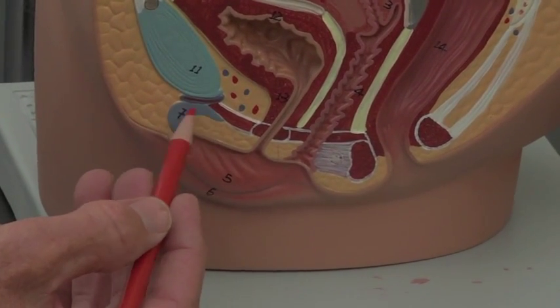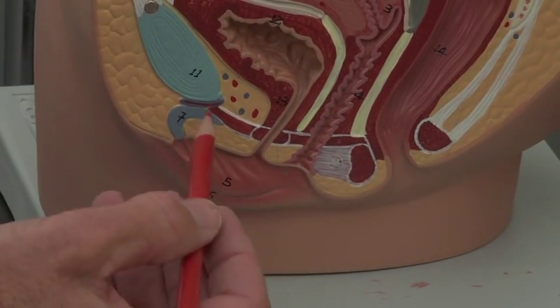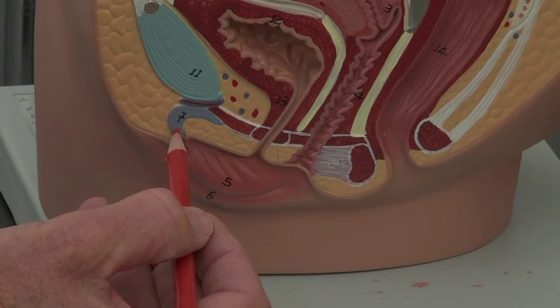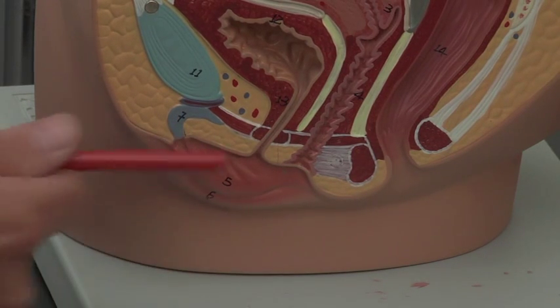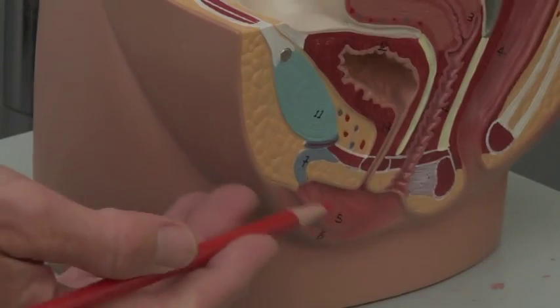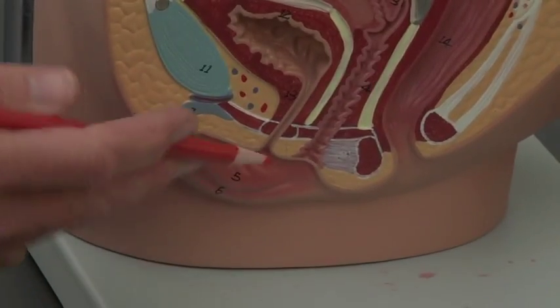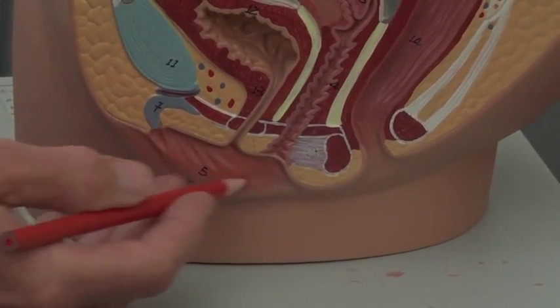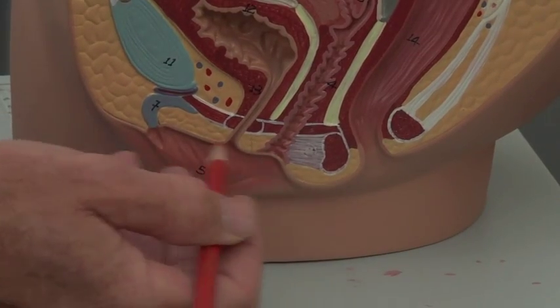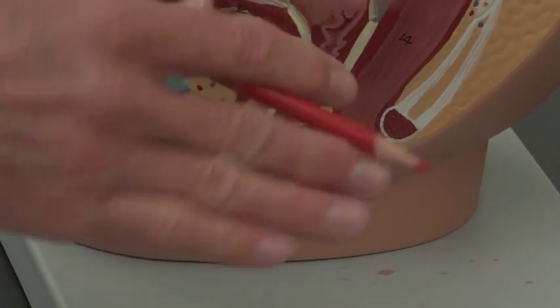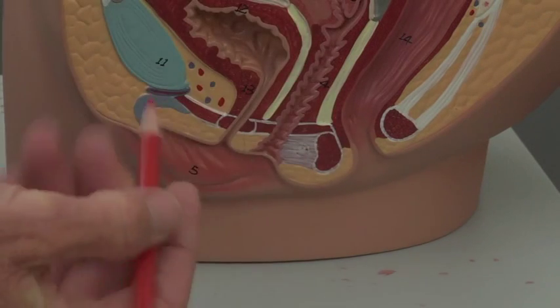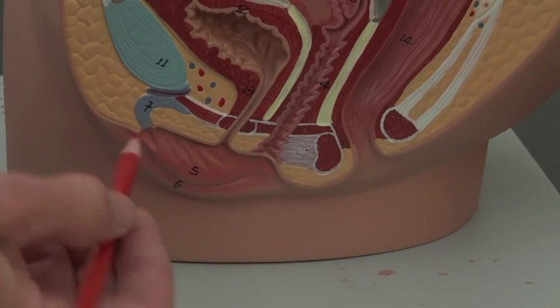This is made up of spongy erectile tissue and it's analogous to the penis in the male. At the anterior end of the woman, the first thing that you're going to see hanging down inside the labia majora, and that region inside the labia majora if you open them up, what's inside of that is what you call the vestibule.